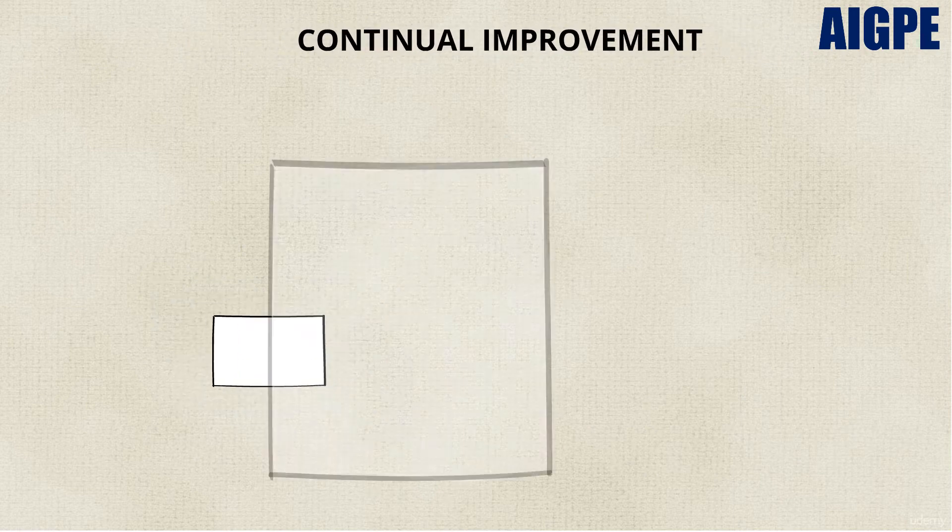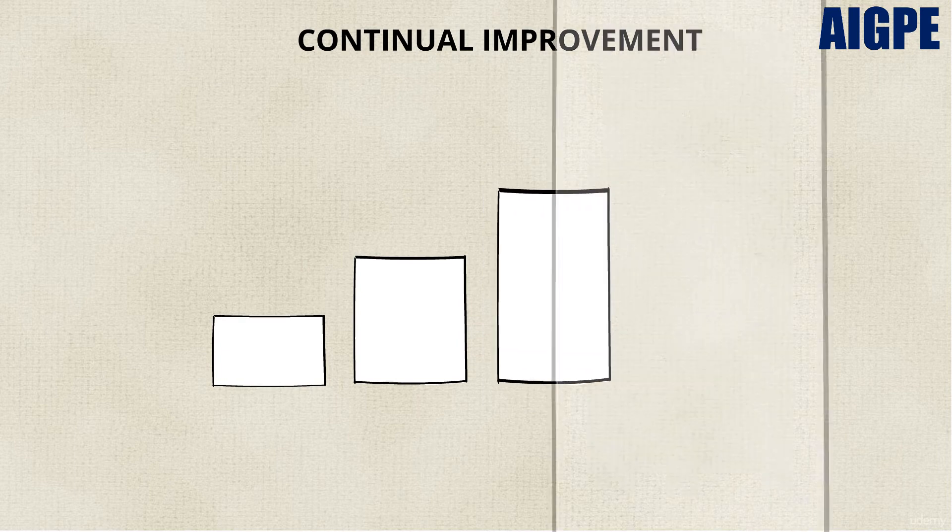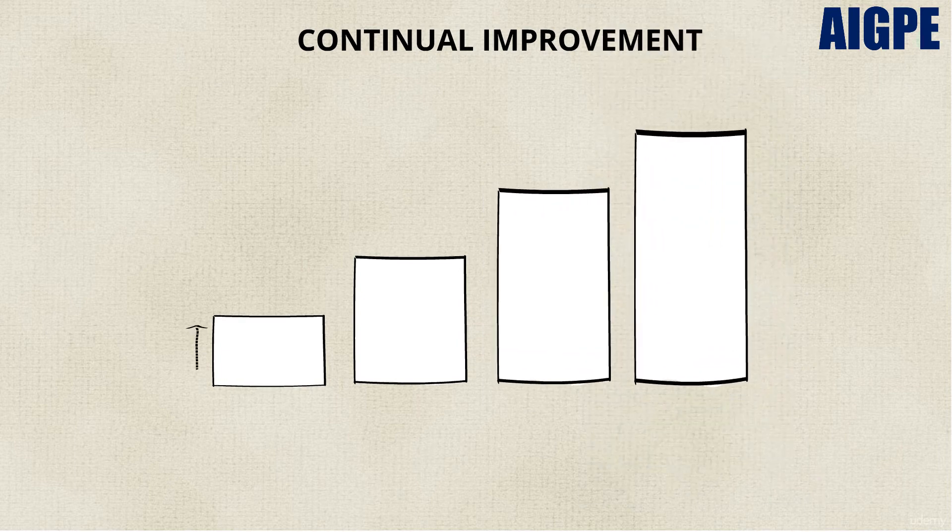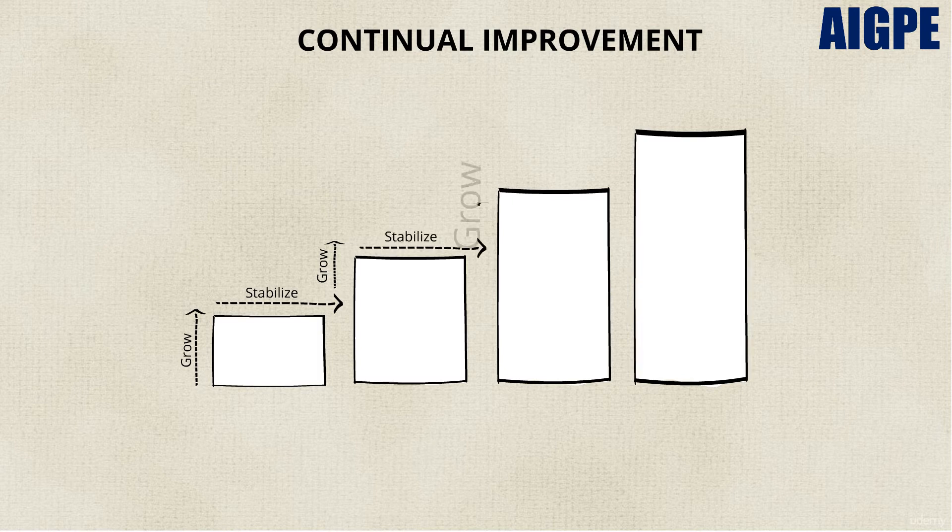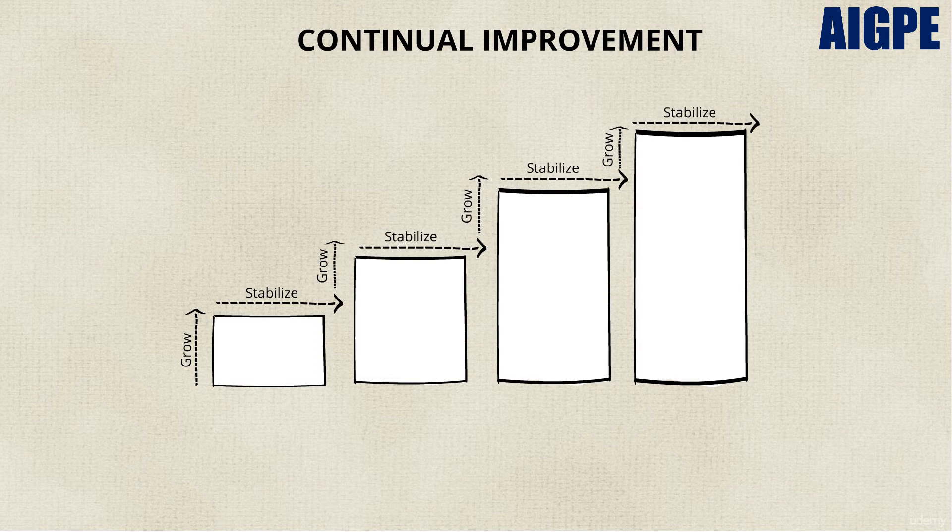On the other hand, continual improvement is where the organization grows for a certain period of time and then stabilizes itself on that growth. Then it continues to grow for some more time, then stabilizes again, then grows again, and stabilizes again. This is a recurring process.